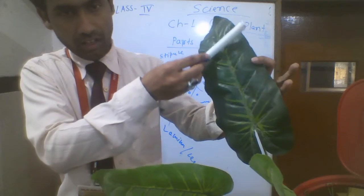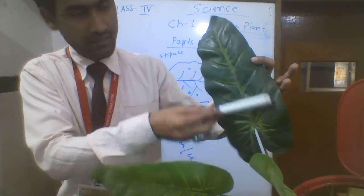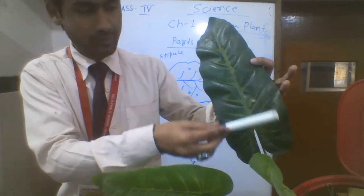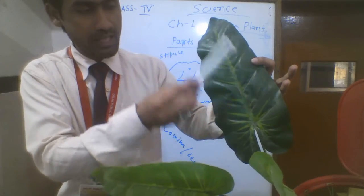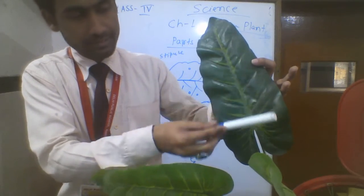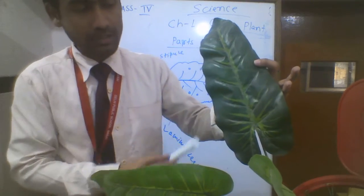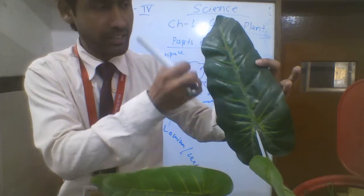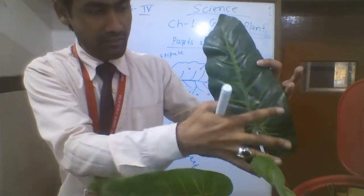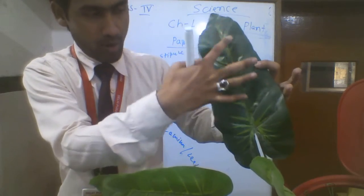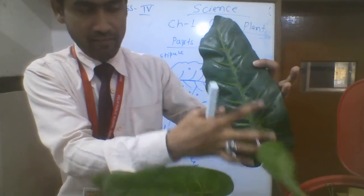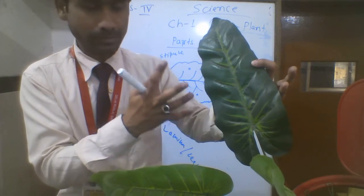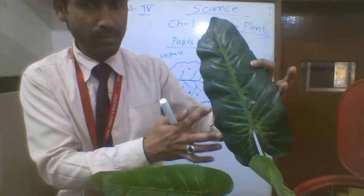The large surface area which absorbs light, air, water, and sunlight is called the lamina, or leaf blade. This is the whole broad, flat area of the leaf — it is called lamina or leaf blade.